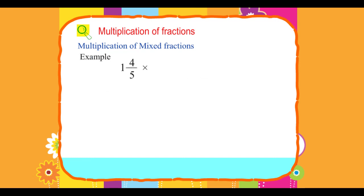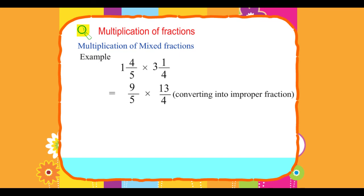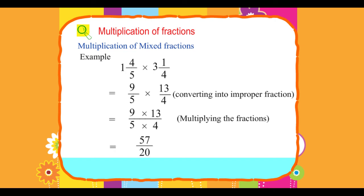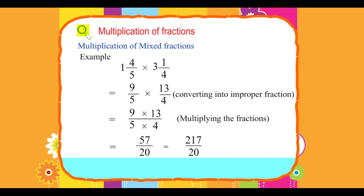Example: 1 4/5 × 3 1/4. Converting to improper fractions: 9/5 × 13/4. Multiplying the fractions: (9 × 13) / (5 × 4) = 117/20. Converting to a mixed fraction: 5 17/20.